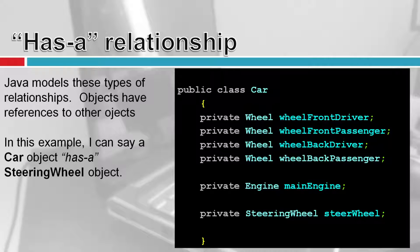Java tries to model real-world examples. Here the car class is made up of other objects — four wheel objects (front driver, front passenger, back driver, back passenger), a main engine object, and a steering wheel object. The main object has references to all these other objects, each of which can do different things. This is what we call the 'has-a' relationship: a car has a front driver wheel, has a main engine, has a steering wheel.